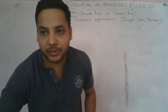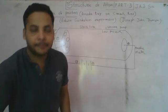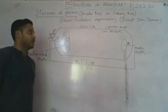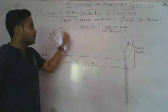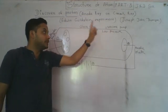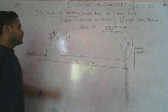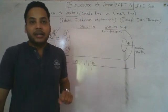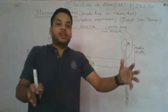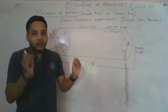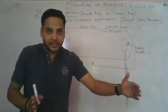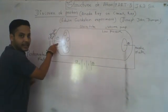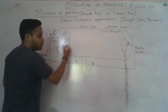Let's see — Goldstein used the same type of glass tube as the Crookes tube experiment. Using a vacuum pump, he lowered the pressure inside the tube. At low pressure, the molecules and atoms are spread at a greater distance, and the same electrons were used as a cathode plate.